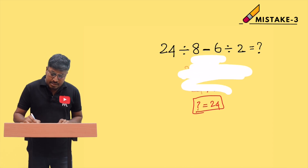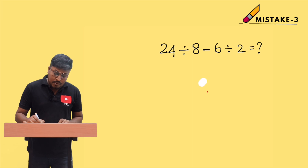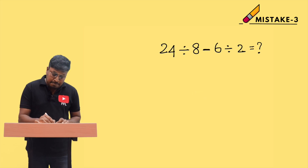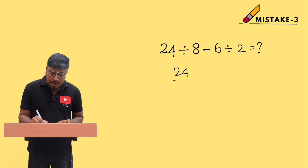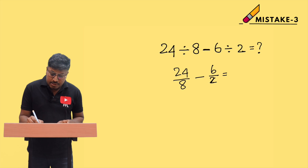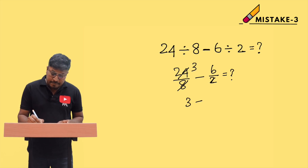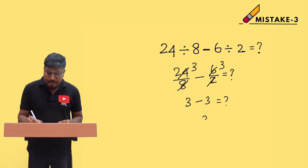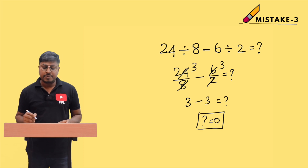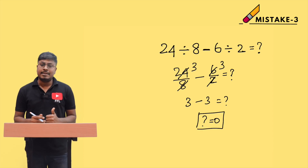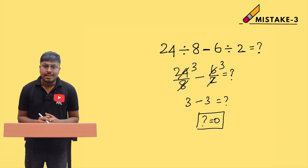According to BODMAS, before subtraction you must divide first. So: 24 ÷ 8 = 3, and 6 ÷ 2 = 3. Then 3 − 3 = 0. So the question mark equals 0, which is the correct answer for this example.